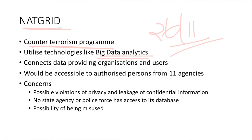This interconnected network will be accessible to persons from 11 to 12 security agencies. Law enforcement agencies will have easy access to information through the intelligence grid. However, there are certain concerns — the main one being that it may lead to violation of privacy and leakage of confidential citizens' information. Also, no state agency or police forces have access to its database.